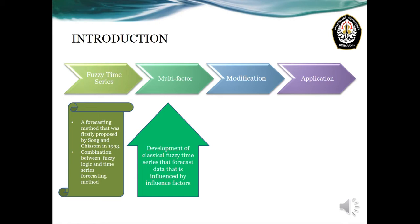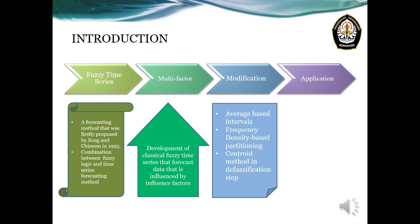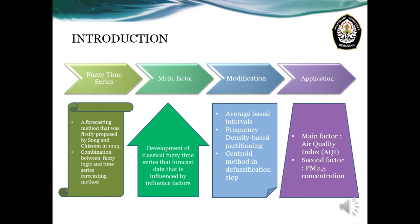So if we want to predict the data in the future, we have to collect not only the main data that we want to predict, but also the influence factors that affect the main data. In this research, we use average-based interval to make an optimal interval number, frequency-density-based partitioning to make an optimal sub-interval partition, and the Centroid Method in the defuzzification step. All modifications are applied for forecasting air quality index with PM2.5 concentration as the second factor.